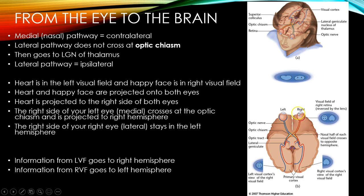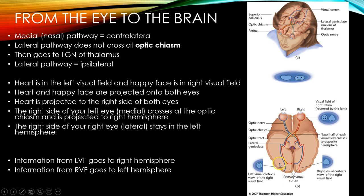The information in the nasal side of the retina crosses, and the neurons from the lateral section of the right eye stay on the same side. In this way, the entire happy face — which was in the right visual field — is projected to the left side of both eyes. Information from one side of the world is processed by the opposite side of the brain. The right visual field goes to the left part of each eye, and that happy face information ends up in the left hemisphere being processed. So information from the right visual field is processed by the left occipital lobe.